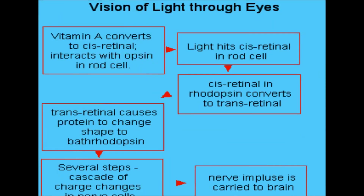Regarding vision of light through the eyes: vitamin A is converted to cis-retinal, which then interacts with opsin protein present in the rod cell. When light hits cis-retinal in rhodopsin, cis-retinal is converted to trans-retinal. This trans-retinal causes the protein to change shape to bathorhodopsin, and a cascade of changes takes place in the nerve cell, after which the nerve impulse is carried to the brain — this is how we see in dim light or twilight.